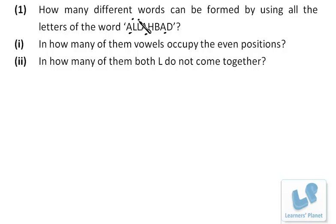Different words without any condition - we count 1, 2, 3, 4, 5, 6, 7, 8. So it's 8 factorial, but we have to divide by the repetition. A is repeated 3 times, so we divide by 3 factorial. L is repeated 2 times, so we divide by 2 factorial. In all, these are the number of ways.